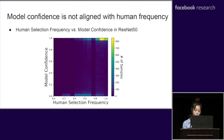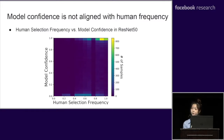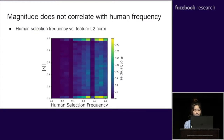We first examine the relation between model confidence and human selection frequency across all testing examples of the ImageNet test sets. Our results shown in the color map indicate that model confidence is not aligned with human selection frequency, verifying the known gap between the human visual system and CNN. Similarly, we found that the L2 norm of the feature embedding also does not strongly correlate with human selection frequency. Naturally, the remaining factor that may correlate with human selection frequency is the angle between the embedding and weight vectors.